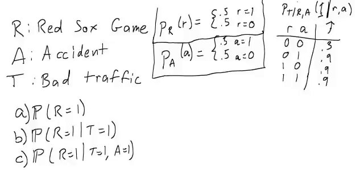Let's look at an example with conditional probability. Suppose we have three events: R, A, and T.